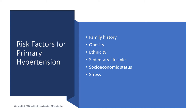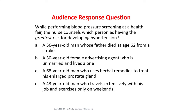Practice question: While performing blood pressure screening at a health fair, the nurse counsels which person having the greatest risk for developing hypertension? Options: A) 56-year-old man whose father died at 62 from a stroke (family history); B) 30-year-old female advertising agent who's unmarried and lives alone; C) 68-year-old male using herbal remedies for enlarged prostate; D) 43-year-old man who travels extensively and exercises only on weekends.